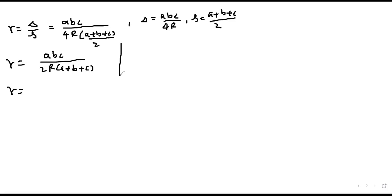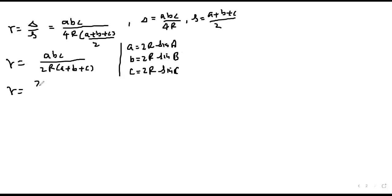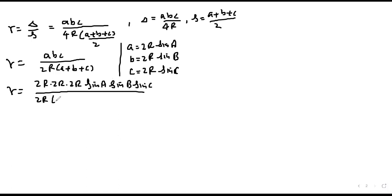Now we will use the sine rule formula: a = 2R·sin A, b = 2R·sin B, c = 2R·sin C — you can see my previous video for this. Substituting these values, the numerator becomes 2R·sin A × 2R·sin B × 2R·sin C, and the denominator has 2R times (sin A + sin B + sin C).